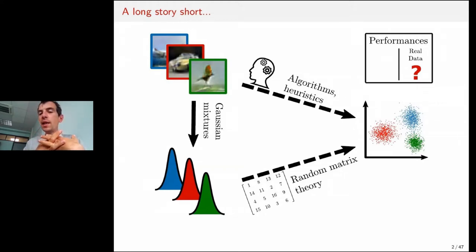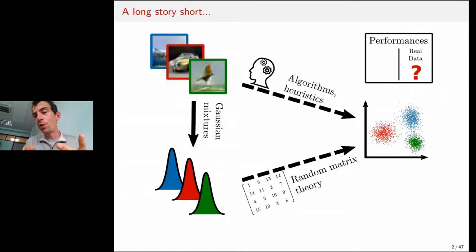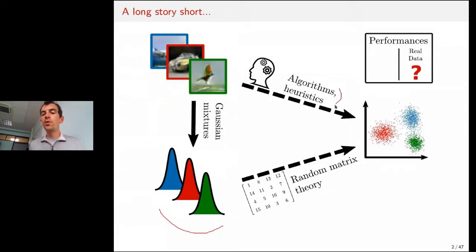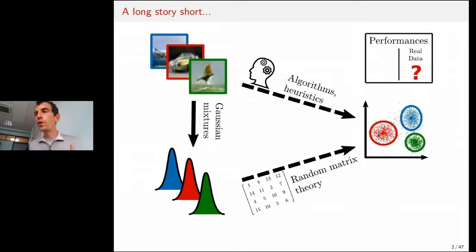Something extremely nice: you realize that many algorithms people have used for 30 years tend not to do what they were supposed to do. They behave strikingly differently in large dimension versus small dimension — a curse of dimensionality. Once you use random matrix theory to understand them, you can improve them, change them, make them work, and even compare their performance to the optimum using information theory.